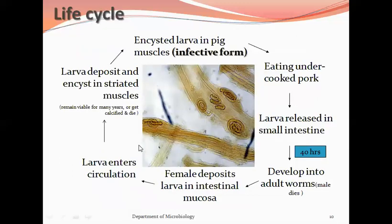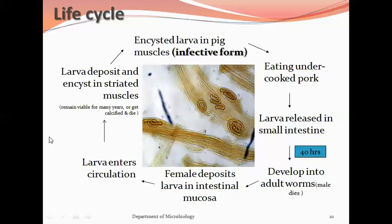To summarize the life cycle: encysted larvae in pig muscles are the infective form. Infection is acquired by eating undercooked pork. Larvae are released in the small intestine and develop into adult worms within 40 hours. The male dies after fertilizing the female. The female deposits larvae in the intestinal mucosa by burrowing into it. The larvae then enter the circulation, become deposited and encysted in striated muscles, and in humans this is a dead end.